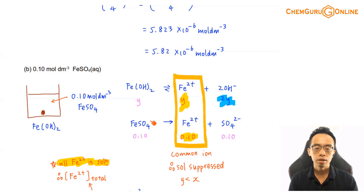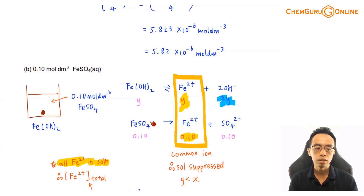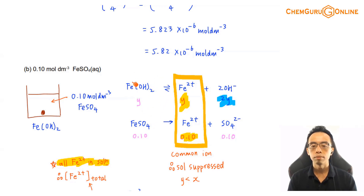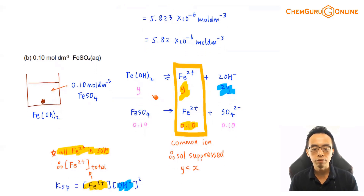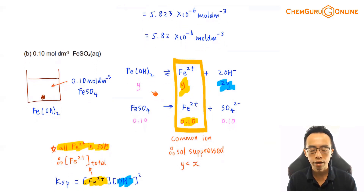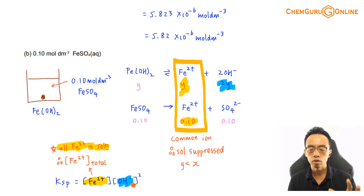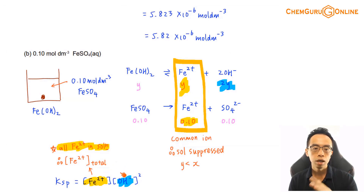Now let us consider solving for solubility. If I want to solve for solubility of iron(II) hydroxide, I have to write down the Ksp for iron(II) hydroxide. So Ksp equals [Fe²⁺][OH⁻]², and I have to substitute all the values based on this system.